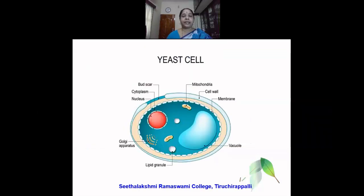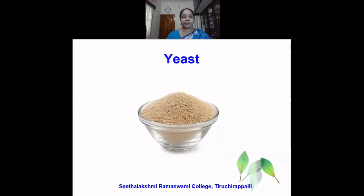This is the classic image of the yeast cell. Yeast is a eukaryote. We have a well-defined nucleus and also the cell organelles in this image. This is the physical appearance of yeast, which is commercially available and largely used for the purpose of fermentation.